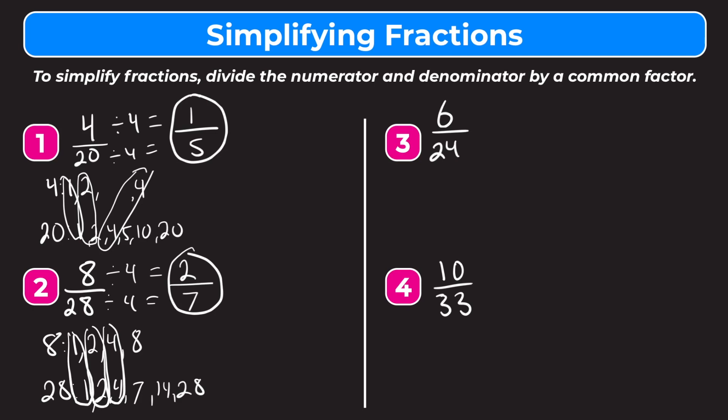Let's try number 3. Sometimes you might notice that two numbers have a common factor and you just want to try it without listing all the factors, and you're welcome to do that. With example 3 — 6 twenty-fourths — if you notice that 6 and 24 are both even numbers, you know they can both be divided by 2, so we can start by dividing both by 2.